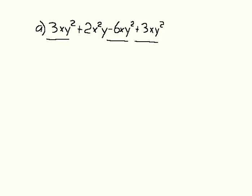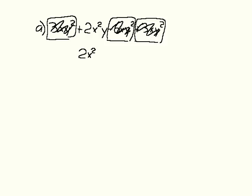So the xy squared terms go away. We can put blocks around those and the signs that are in front of them and scratch them out. We're left with 2x squared y. So that's our answer, positive 2x squared y.